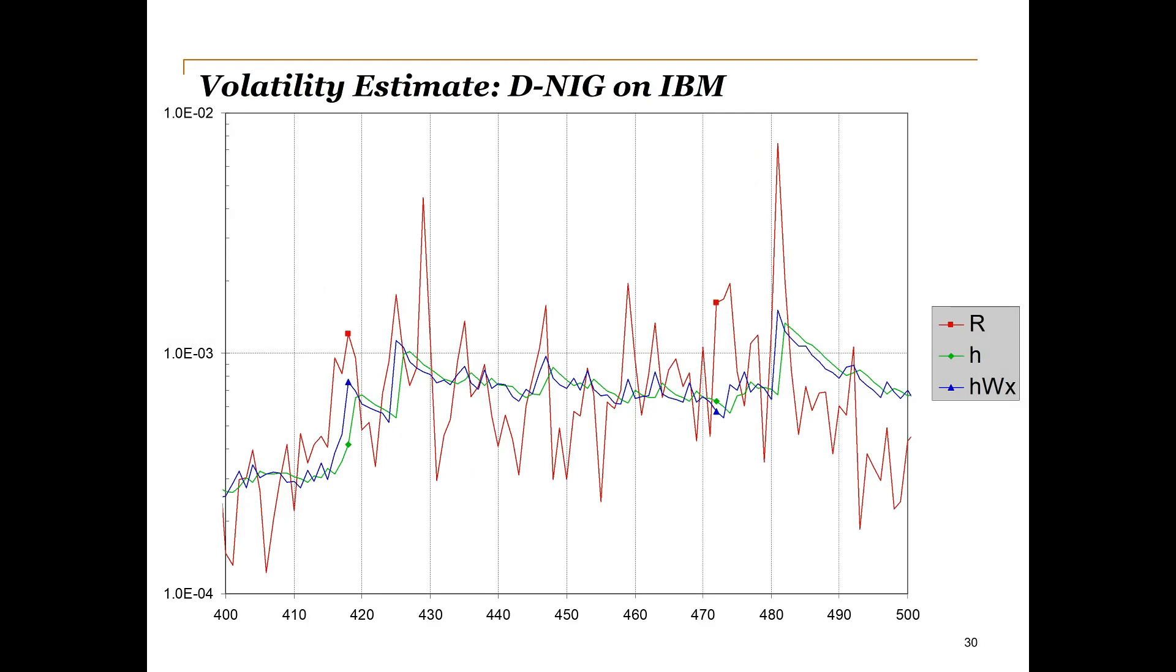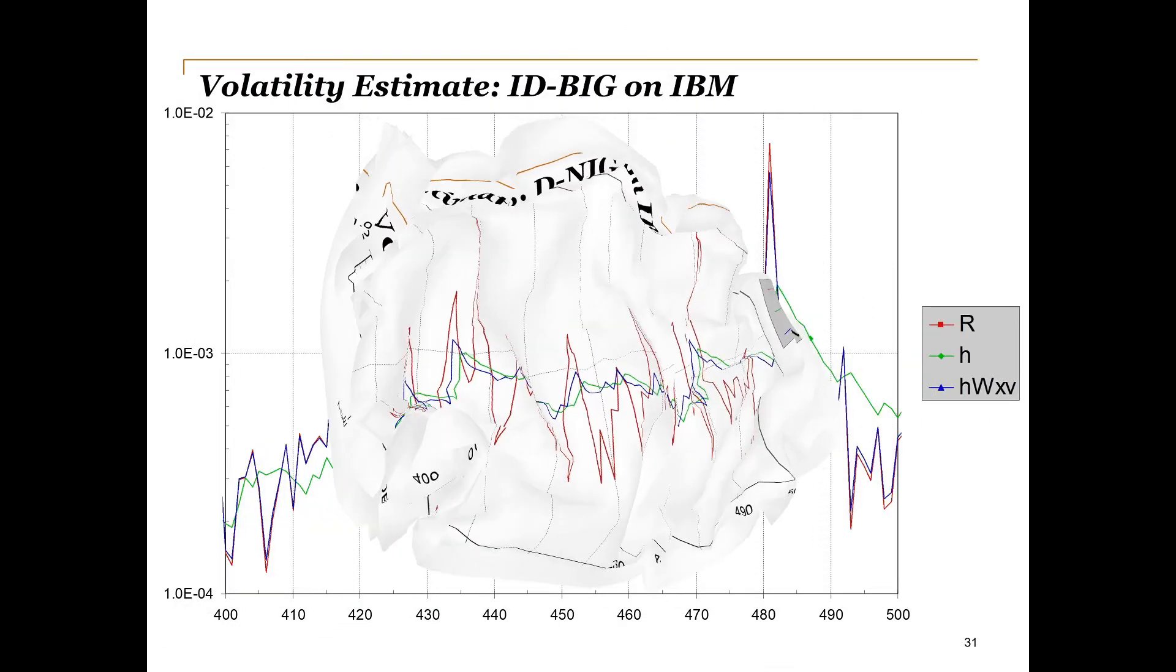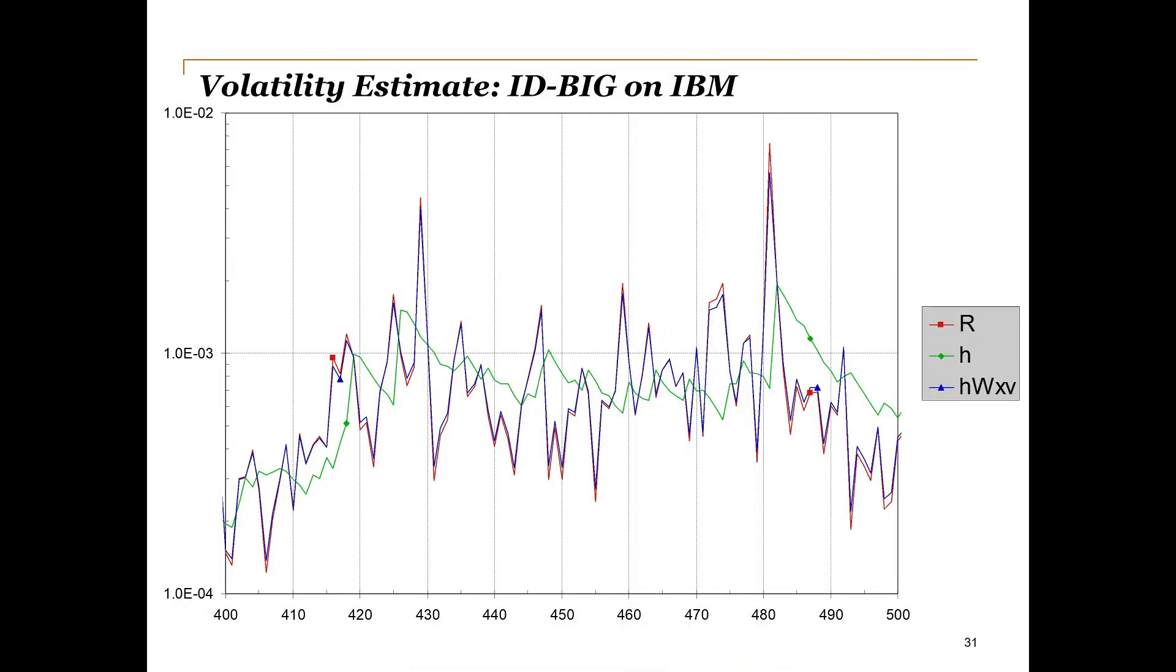This is expected since intraday data has not yet been used. Bringing the intraday data into the model, we see that W adjusts H to such an extent that it overlaps almost perfectly with the realized volatility. So the normal inverse Gaussian innovations with intraday data allows us to describe the volatility much better than before.